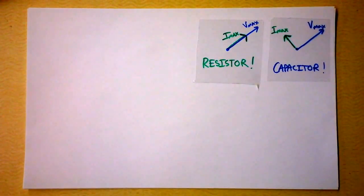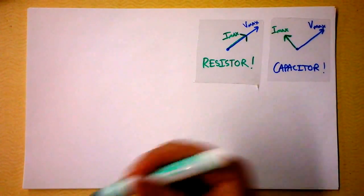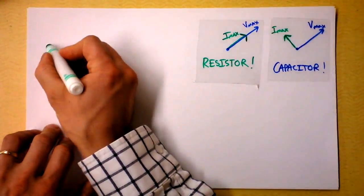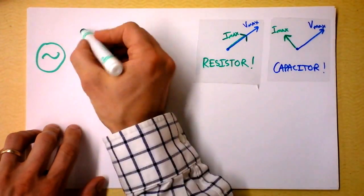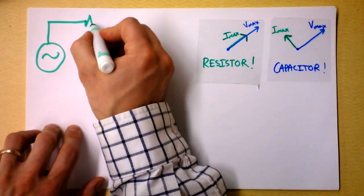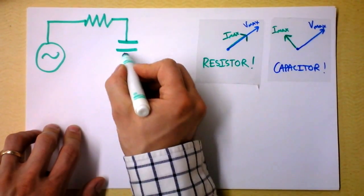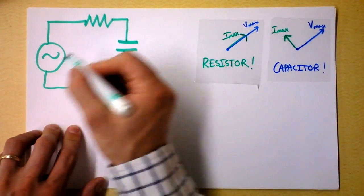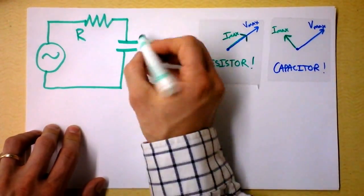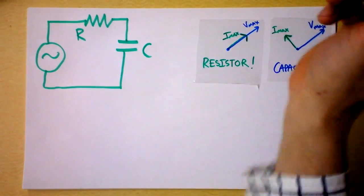So in the corner I've got the two phasors for resistors and capacitors and I'm going to draw you a little AC circuit here. We've got an AC generator and we'll connect immediately to a resistor and then go to a capacitor. And this is an RC circuit because we've got some resistance and we've got some capacitance.